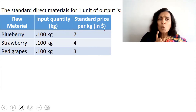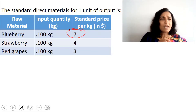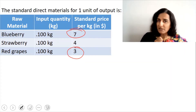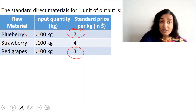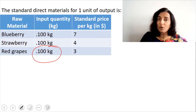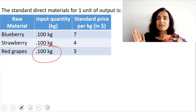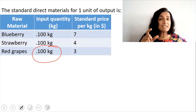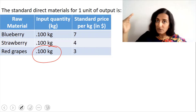Among these three, blueberry is the most expensive raw material at $7 per kg, and red grapes is the cheapest. If you use blueberry more than its one-third share, you will incur a loss because you are using an expensive raw material more than standard. If you use red grapes more, you will have a higher profit because you are using a cheaper raw material more. This is what we measure in the direct material mix variance — whether the mix equals the standard, whether it uses more of an expensive or cheaper raw material.